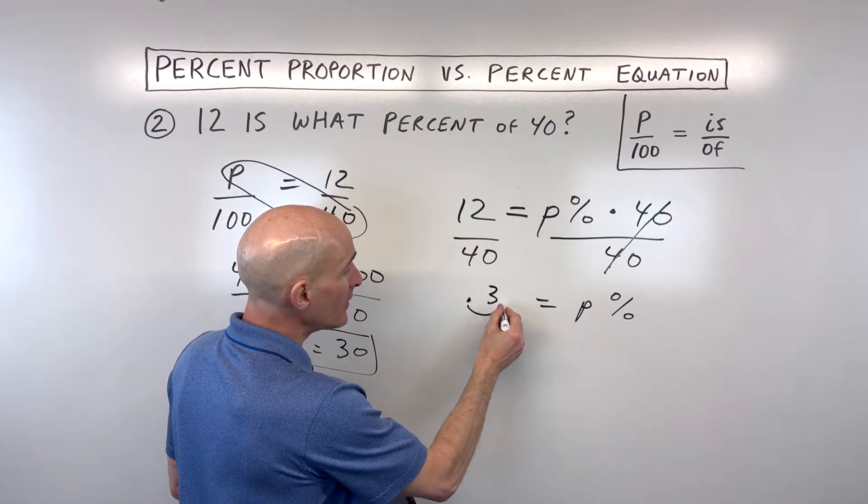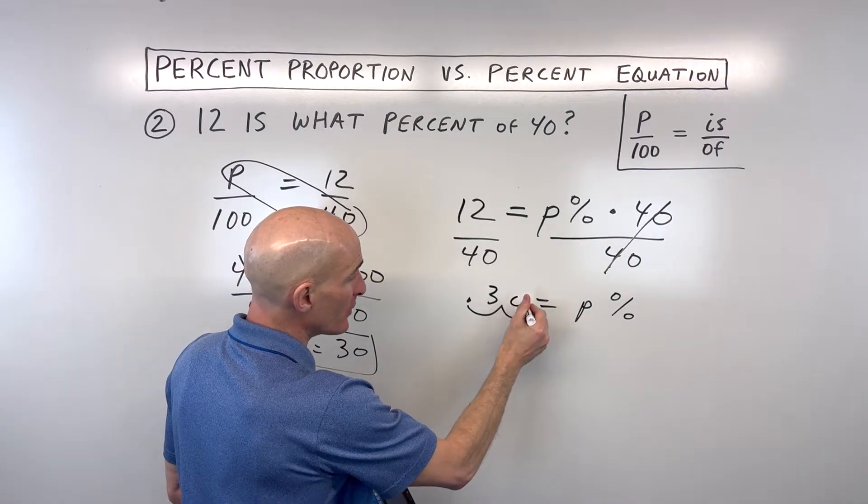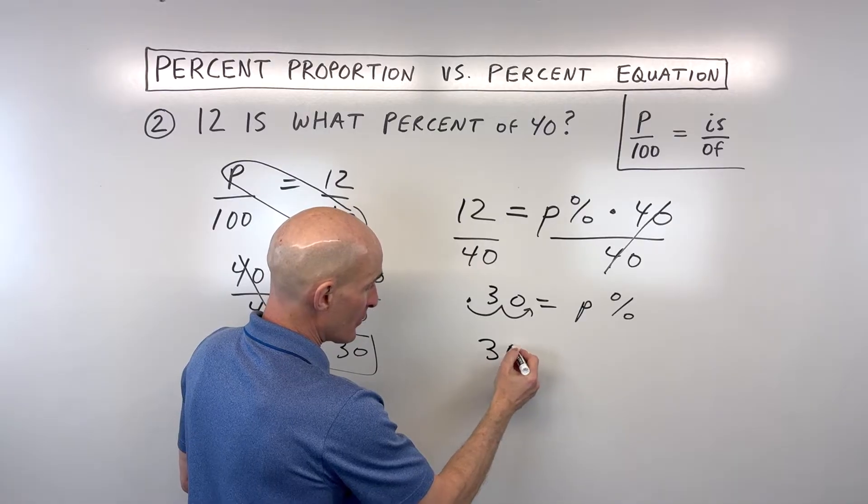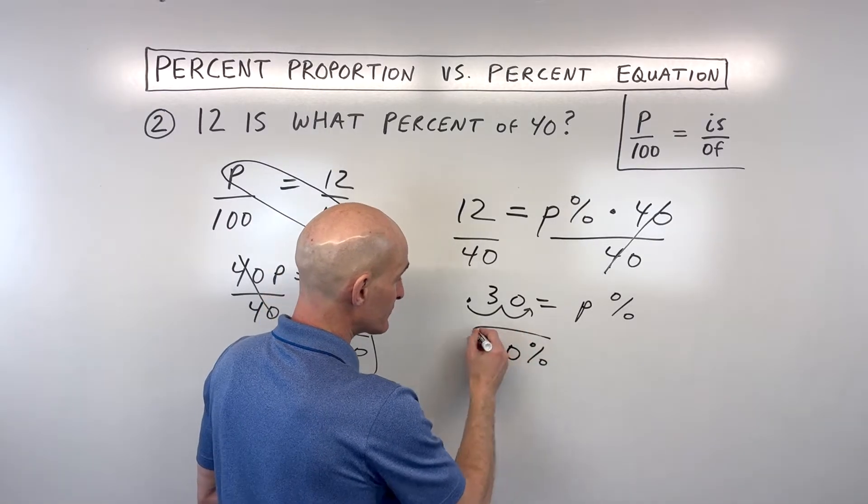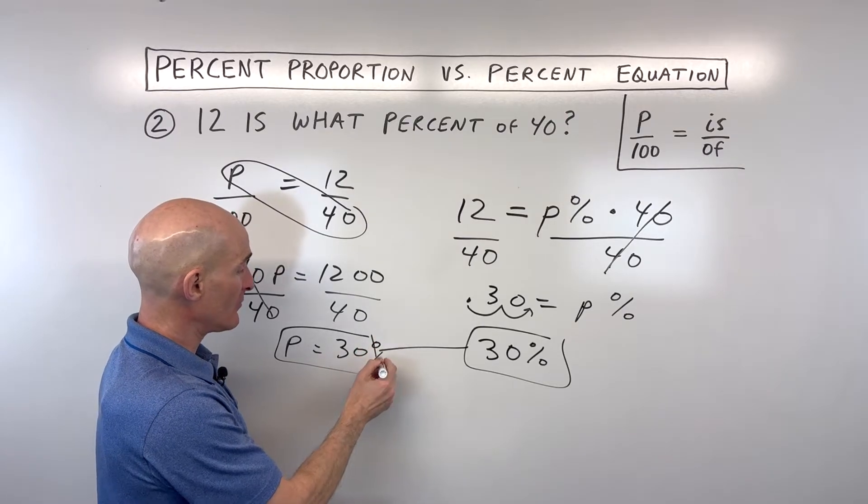We move the decimal one, two places to the right. There's not a number here, so we're going to put a placeholder, and that's going to be 30%, same thing we got over here when we did the proportion method, 30%.